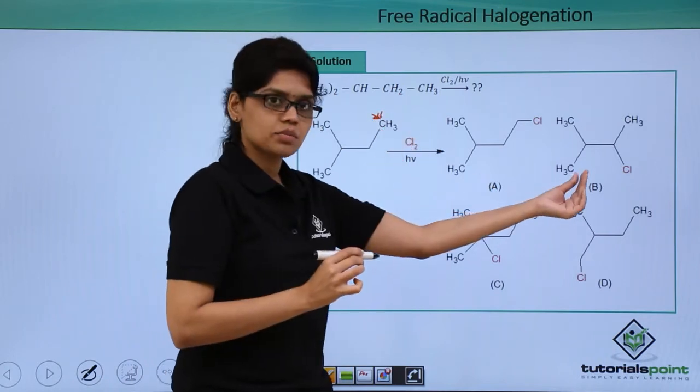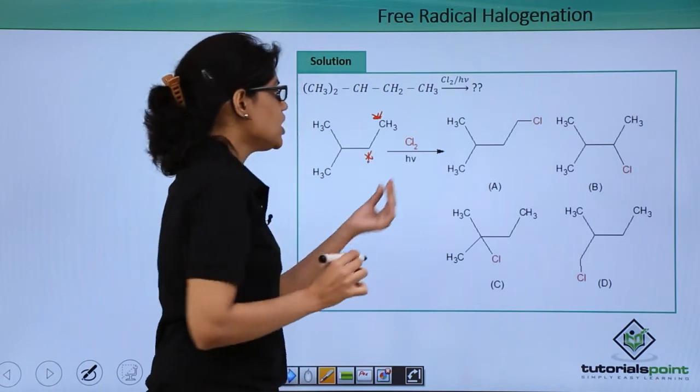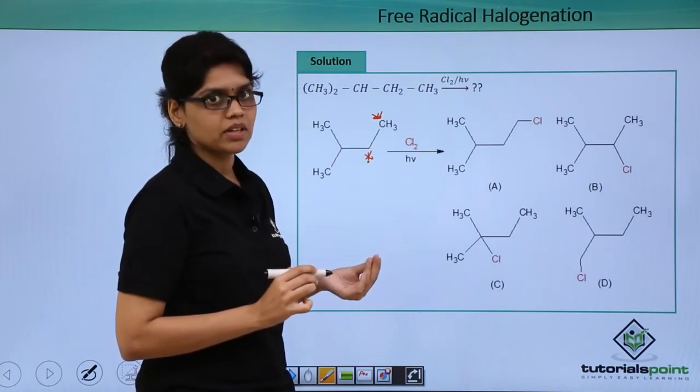In the second structure B, we are getting a secondary alkyl halide where chlorine adds to this particular carbon atom.